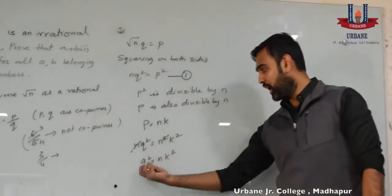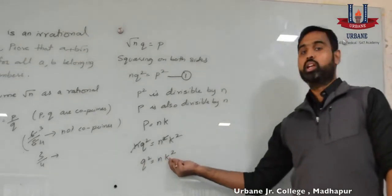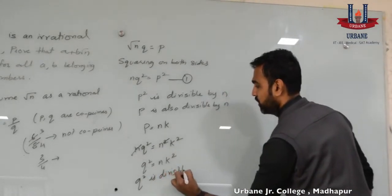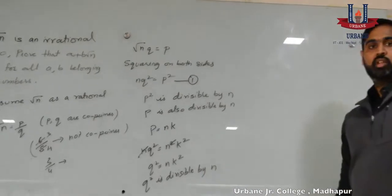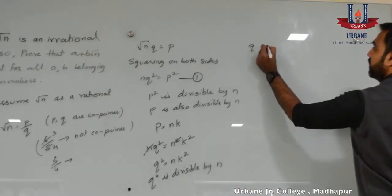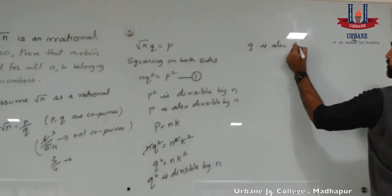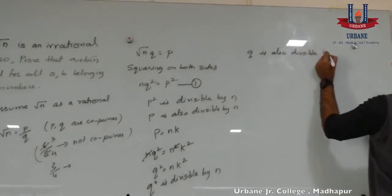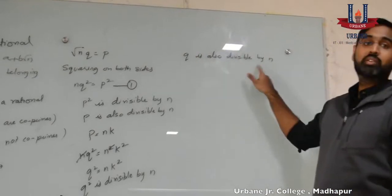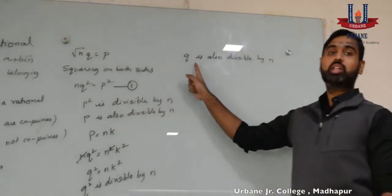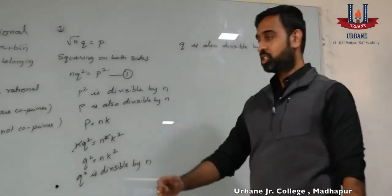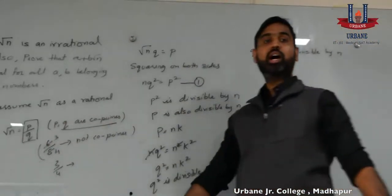If you look at this, we again have q squared as a product of n and k squared, which means q squared is divisible by n. And for the same reason, since n is a prime number, we have q also divisible by n. So, what did we find? p is divisible by n, and we also got q divisible by n. So when both p and q are divisible by n, we get a common factor to p and q, which contradicts our assumption that p and q are co-primes.